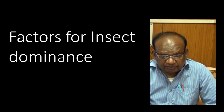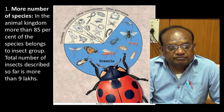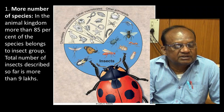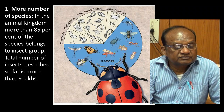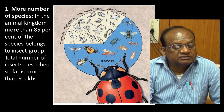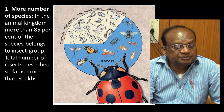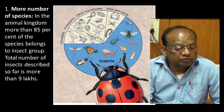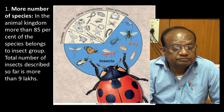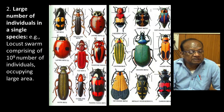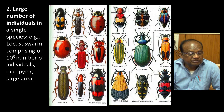Now, what are the factors responsible for the dominance of insects on the globe? Among the animal kingdom organisms, 85% of the species are occupied by insects. The total number of insect species described so far is more than one million. A single species can have enormous populations — for example, a locust swarm comprises 10 to the power 9 individuals occupying a large area.